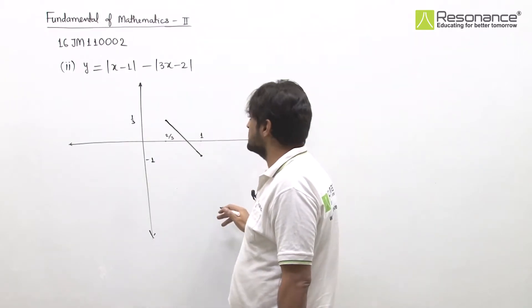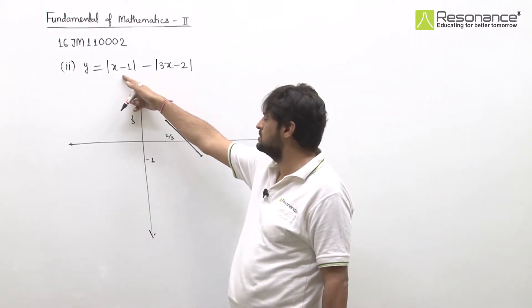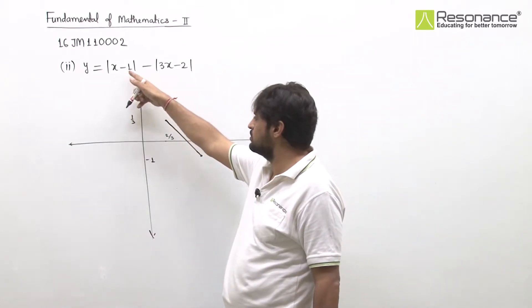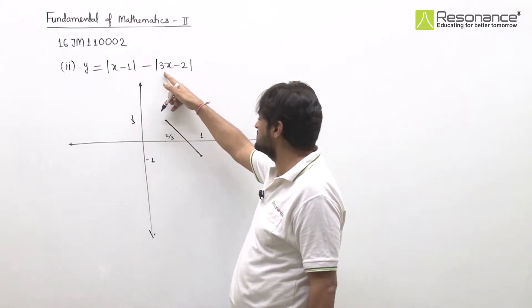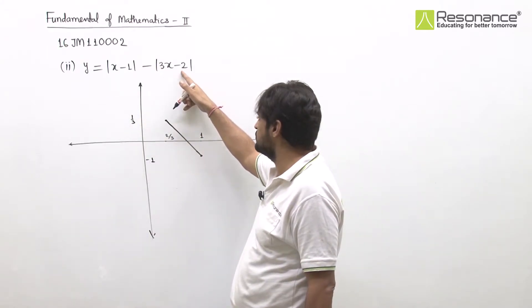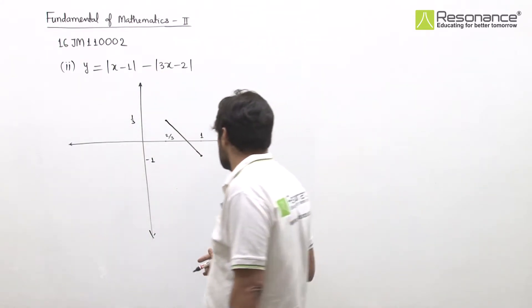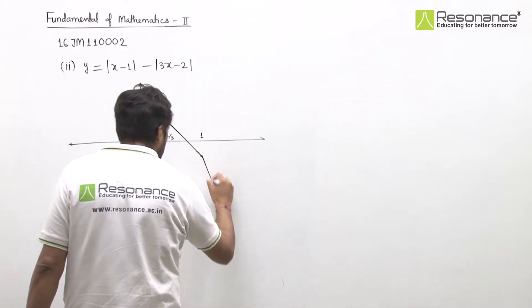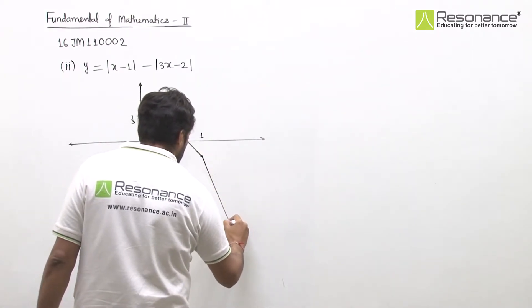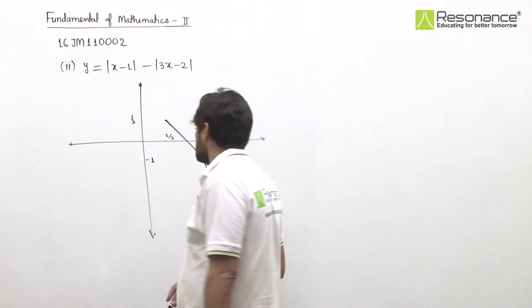Taking a value greater than 1, say x = 2: the first term gives 1, and the second gives mod of (6 minus 2) = 4, so 1 minus 4 = minus 3. The value becomes more negative, going further negative as x increases beyond 1.